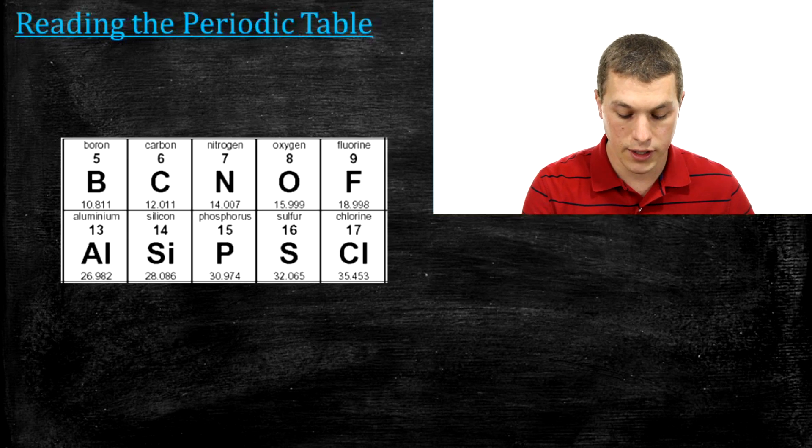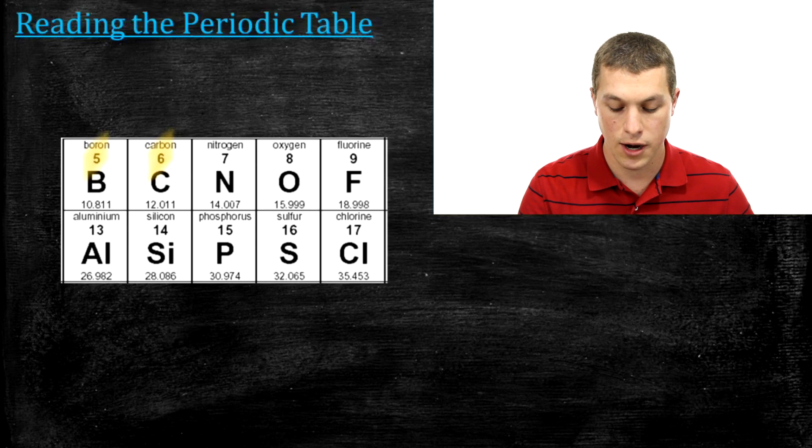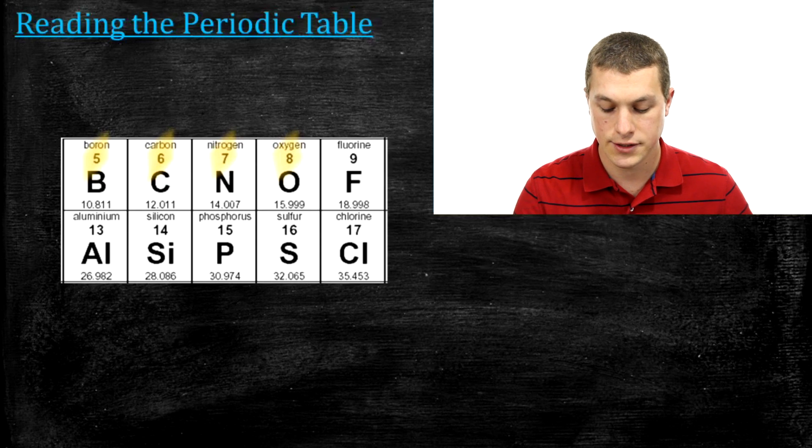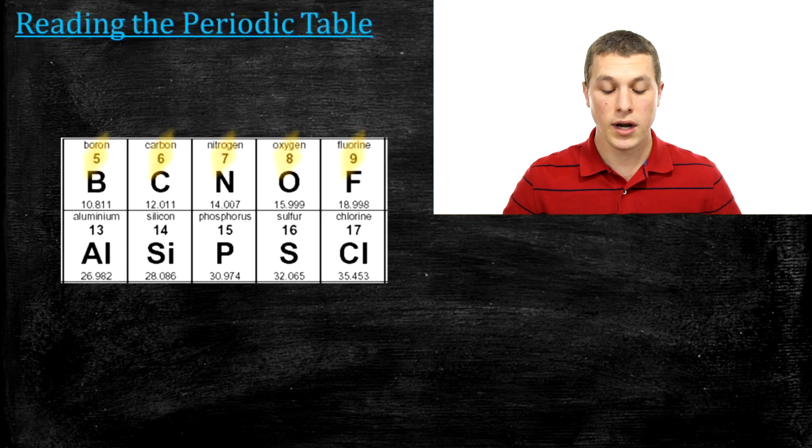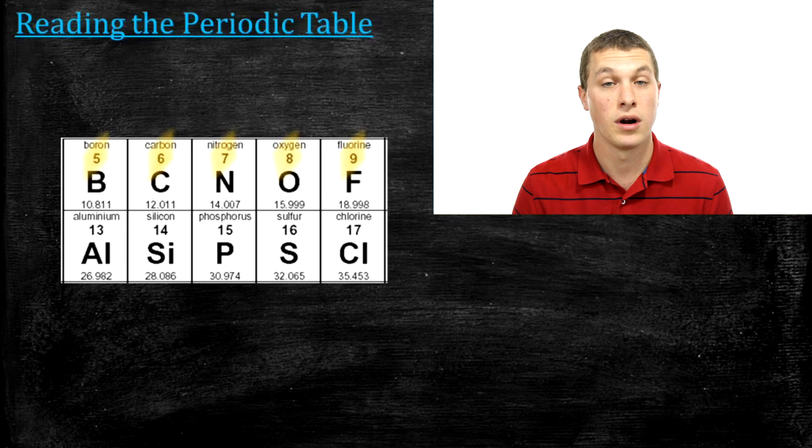So you see boron over here is 5, and then we have 6 for carbon, 7 for nitrogen, 8 for oxygen, 9 for fluorine, and so forth. So the periodic table is organized by how many protons each element has, or what its atomic number is. Those mean the same thing.